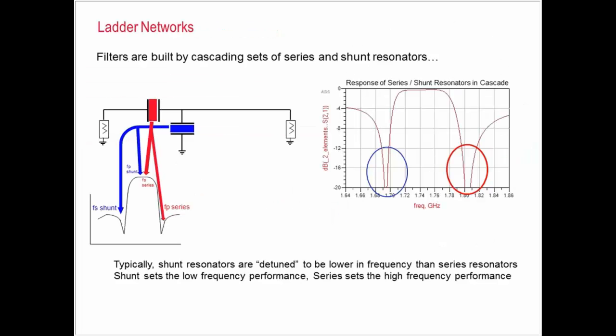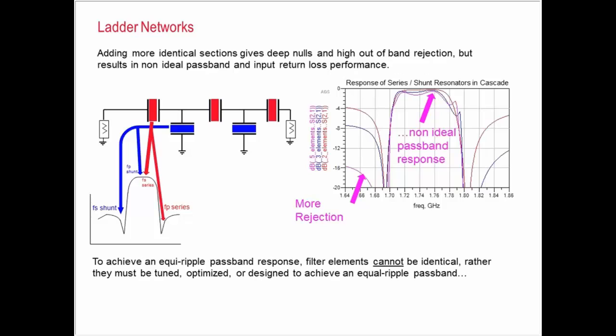And the way that they're built is by cascading sets of them together. So we can create a ladder network by doing a series resonator and a shunt resonator. And usually the shunt resonators are detuned in frequency. So those set the lower bandpass null. And the series resonator will set the higher bandpass null. So we can improve the rejection of the nulls by just adding more elements to the filter. That's usually what's done.